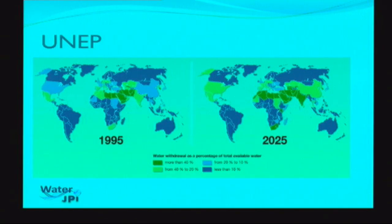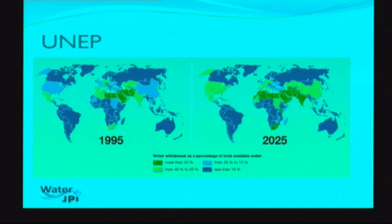Looking at the four sites coordinated by UNEP, you can see that water withdrawal is a function of total water availability. The North African countries are already over-exploiting their water resources. By 2025, India and China will face large problems, but also Europe — mainly southern Europe, but also central Europe.